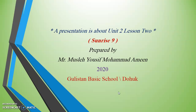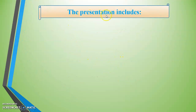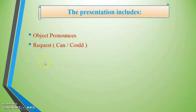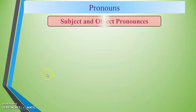Hello dear students, I'm back to present a new lesson. In this lesson I'm going to talk about grammar materials in unit 2, lesson 2 from Sunrise. The presentation includes object pronouns, requests with can and could, verb plus direct and indirect object, and verb infinitive.